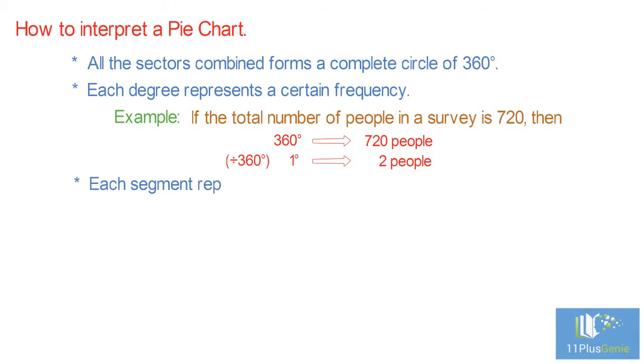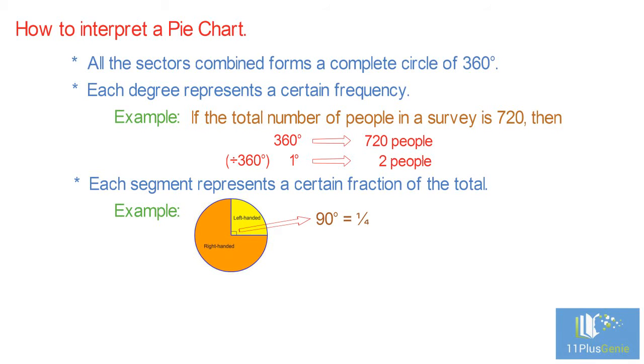Each segment represents a certain fraction of the total. Example. In this pie chart, 90 degrees is a quarter of the circle. That means it represents a quarter of all of the data.